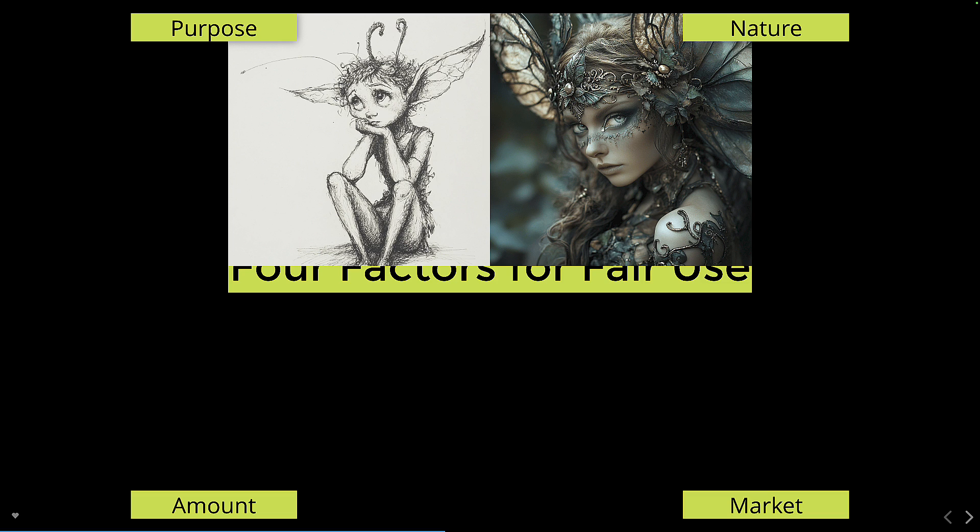Next, we meet the 'nature nymph,' a fickle spirit who judges the essence of the copied work. This refers to the nature of the original work itself — its characteristics. The nymph favors facts and information — things like news reports, scientific data, and historical information — which are more likely to be considered fair use than creative works, because the law recognizes that facts themselves cannot be copyrighted, only the expression of those facts.